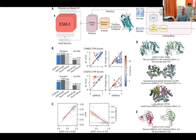In ESMFold, you have a single sequence, you run it through the ESM embedding, then a folding trunk and structure module — basically the AlphaFold structure module with triangle updates. The structure is very similar to AlphaFold and the performance is around 0.65–0.85 TM-score. There are cases where it performs better, but in general it's not doing badly.